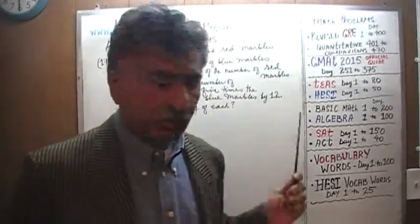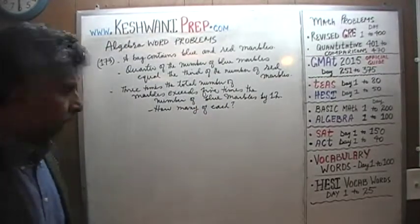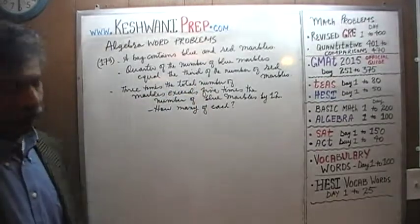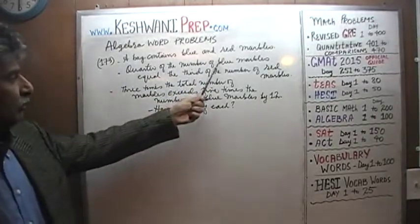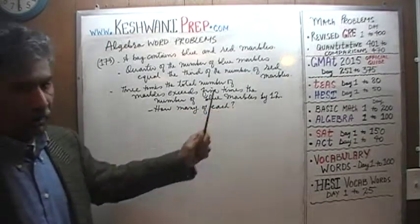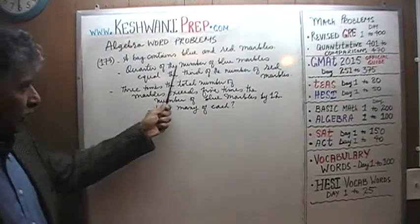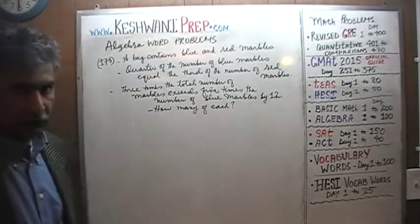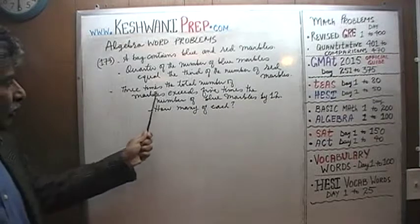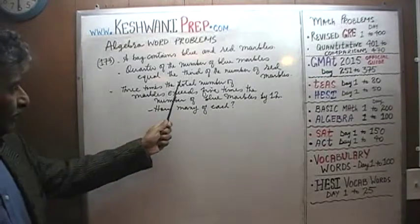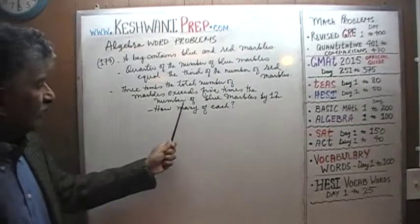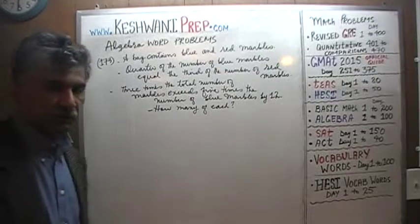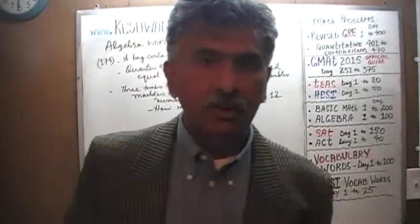The problem is already on the blackboard. Let's take a look at it. It says that we have a bag that contains blue and red marbles. A quarter of the number of blue marbles equals a third of the number of red marbles. They go on to tell us that 3 times the total number of marbles exceeds 5 times the number of blue marbles by 12. The question is: how many blues and how many reds do we have?